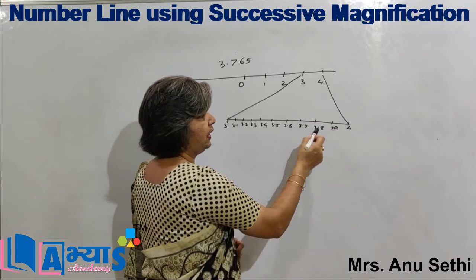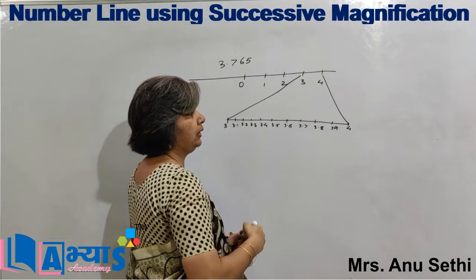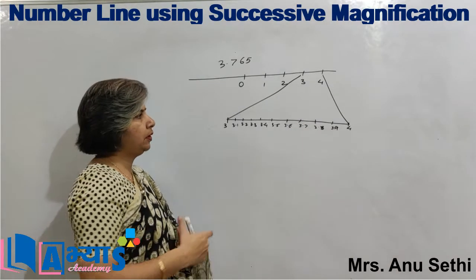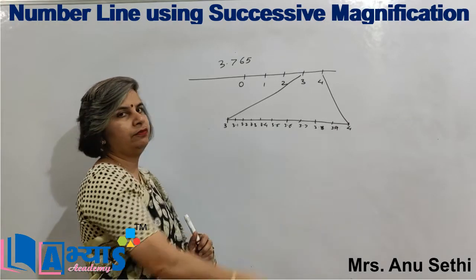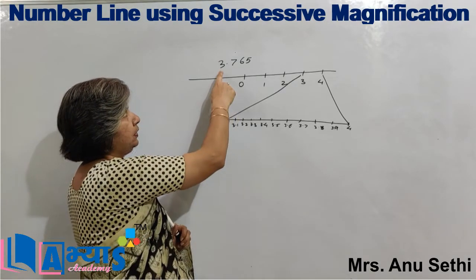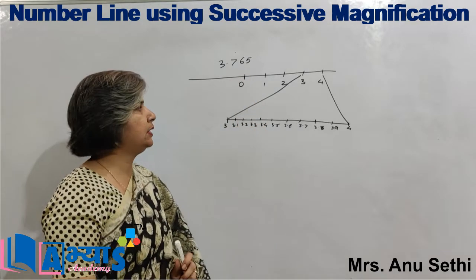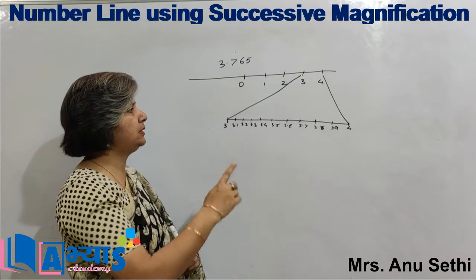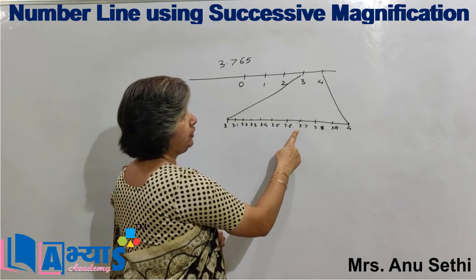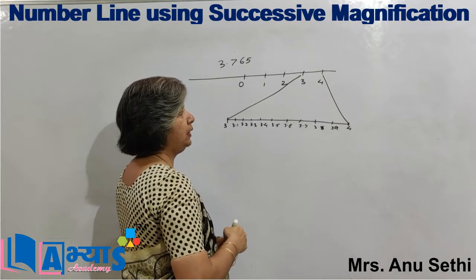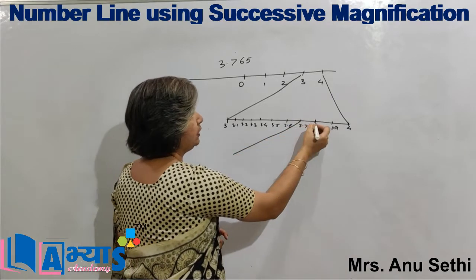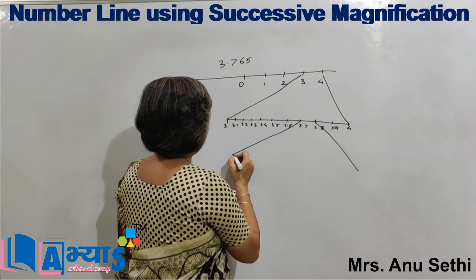Now I know the number is 3.765, and 3.765 will lie between 3.7 and 3.8. It is greater than 3.7 and less than 3.8. So this number lies between 3.7 and 3.8, and I will now magnify the area between 3.7 and 3.8.